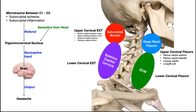On the back side, we have the upper cervical extensors, termed the suboccipital muscles, and there are four of them as well: rectus capitis posterior major, rectus capitis posterior minor, obliquus capitis superior, and obliquus capitis inferior. The suboccipital muscles on the back side are extensors of the upper cervical spine, and the deep neck flexors on the anterior side are flexors of the upper cervical spine.